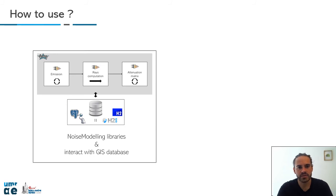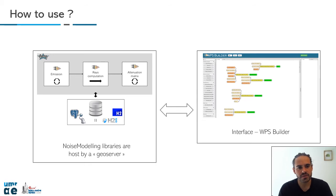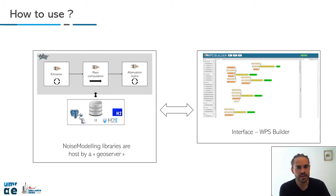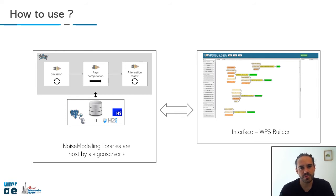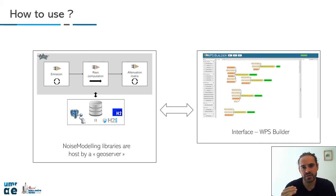Finally, we also developed a user interface. We host all the noise modeling libraries and the database inside a GeoServer, which is a kind of server compatible with GIS format. You can manipulate spatial features and view maps on this server. To pilot the GeoServer, we use an interface called WPS Builder — WPS for Web Processing Services. It's a platform we adapted for noise modeling. You can drag boxes from a panel on the left, where each box represents a script you can use as a user — not a developer — to compute the emission part, manipulate the database, import data, export data, and so on.